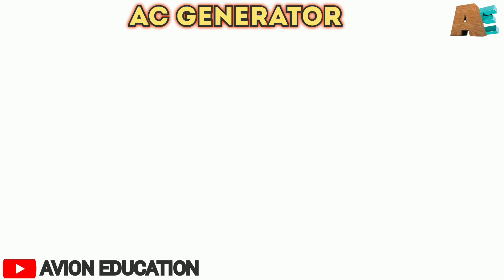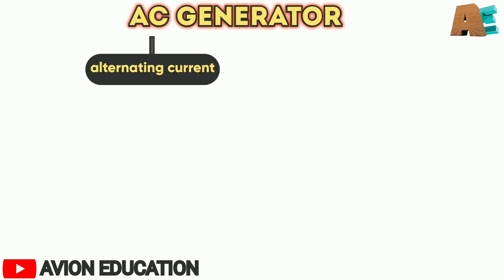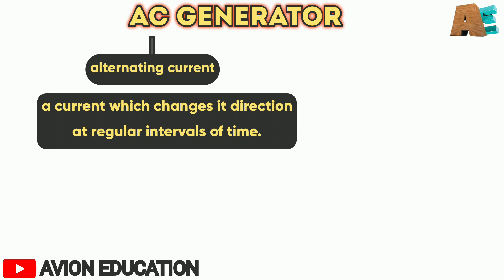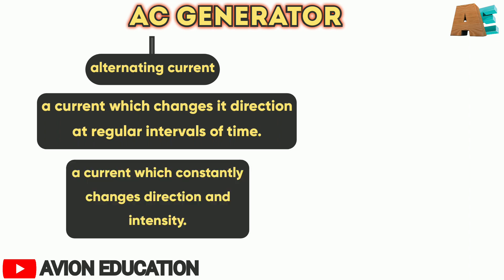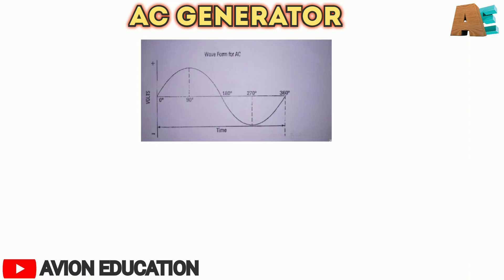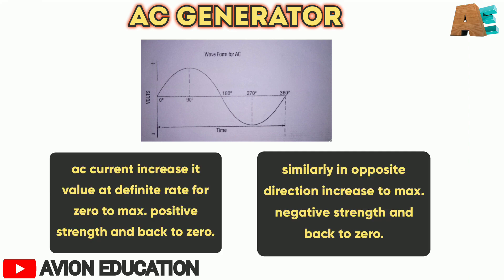AC, or alternating current, is a current which changes its direction at a regular interval of time — a current which constantly changes direction and intensity. As you can see in the figure, it increases from zero to the maximum positive value, decreases back to zero, then increases to the maximum negative value, and again decreases to zero.